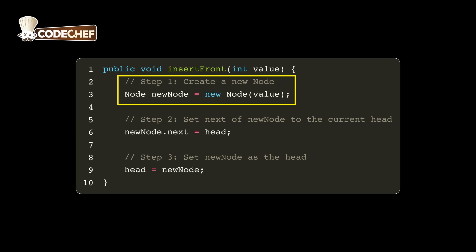Step 2: We set the next pointer of the new node to point to the current head of the list. This connects the new node to the existing list.